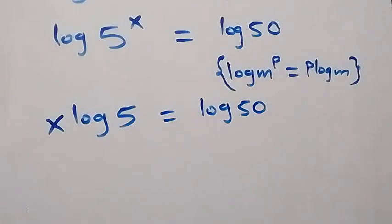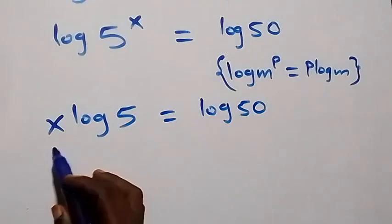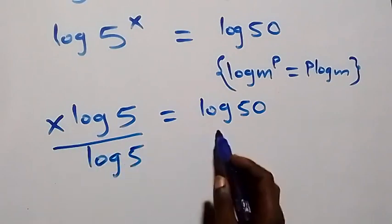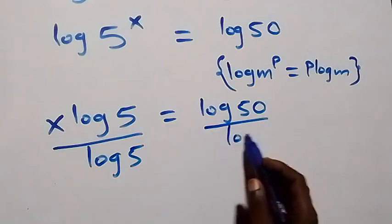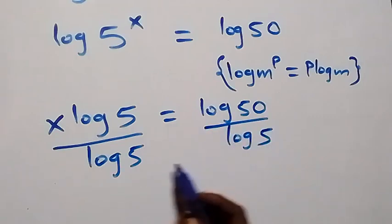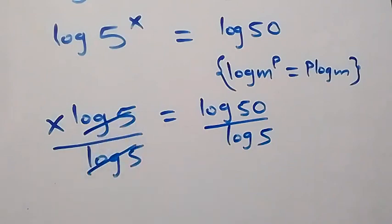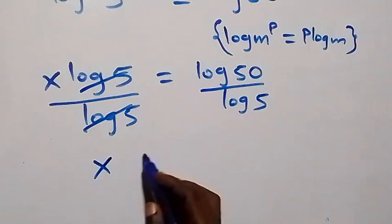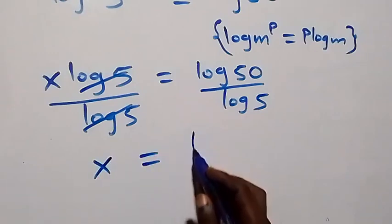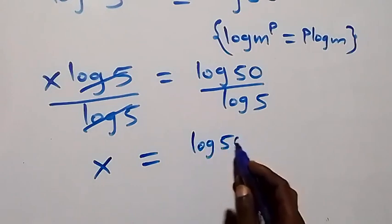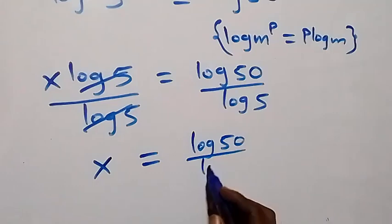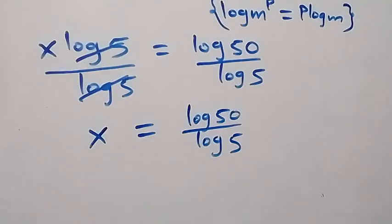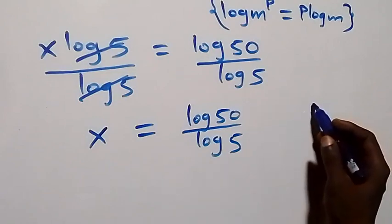In the next step, let's divide both sides by log 5. We divide this side by log 5 and also divide this side by log 5. Then log 5 cancels each other, so we have x equals to log 50 over log 5.